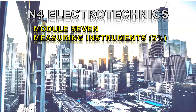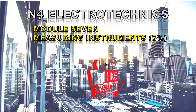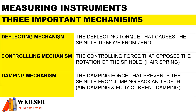Welcome to N4 Electrotechniques. This is our very last module and we'll be looking at measuring instruments. There are three important mechanisms found in measuring instruments: we have the deflecting mechanism, the controlling mechanism, and the damping mechanism.